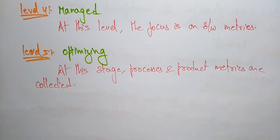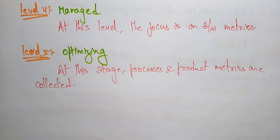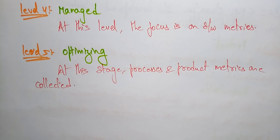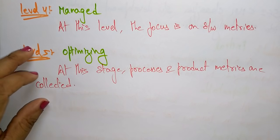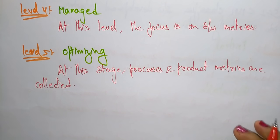So this is about the overview of the SEI — Software Engineering Institution — developed CMM, that is the Capability Maturity Model. It is a standard given to organizations on five maturity levels: level one is Initial, level two is Repeatable, level three is Defined, level four is Managed, and level five is Optimized. Thank you.